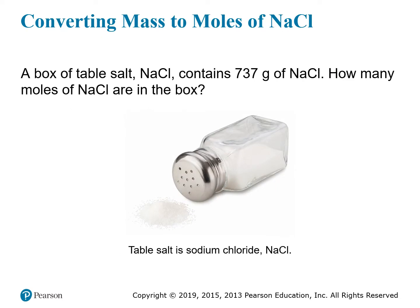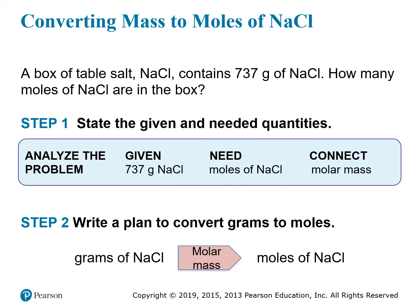For example, we can take a problem like this. A box of table salt, NaCl or sodium chloride, contains 737 grams of sodium chloride. How many moles of sodium chloride are in the box? This is really a very simple one-step conversion from the mass of the compound to the moles of the compound. Step one is to state the given and needed quantities: we're given 737 grams of sodium chloride, and we need the moles of sodium chloride. The thing that converts mass to moles is the molar mass. Step two is to write the plan to convert grams to moles — start with grams, multiply by a conversion factor related to the molar mass, and that gives us moles of sodium chloride.